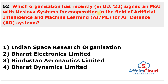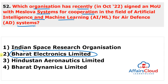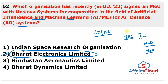Next question: which organization recently signed an MoU with Melsova Systems for cooperation in Artificial Intelligence and Machine Learning for air defense systems? The answer is Bharat Electronics Limited (BEL). BEL, a Navratna defense public sector enterprise under the Ministry of Defense, signed an MoU with Melsova Systems for cooperation in AI and ML for the air defense system for the armed forces. This MoU enables both organizations to develop and deploy products and services with AI and ML embedded and integrated for the air defense system of the armed forces.